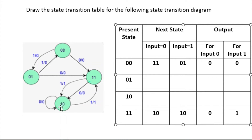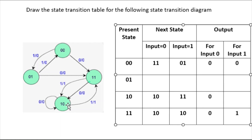Now come to state 1 0. For input 0, there is no outgoing transition shown, which means the next state stays at 1 0 and the output is 0. For input 1, the next state is 1 1 and the output is 1.